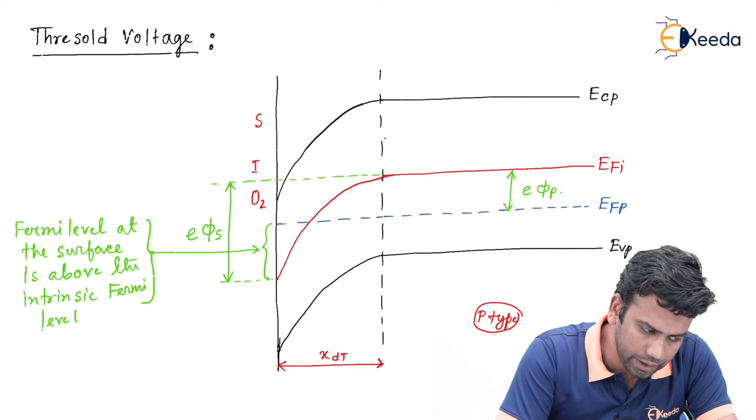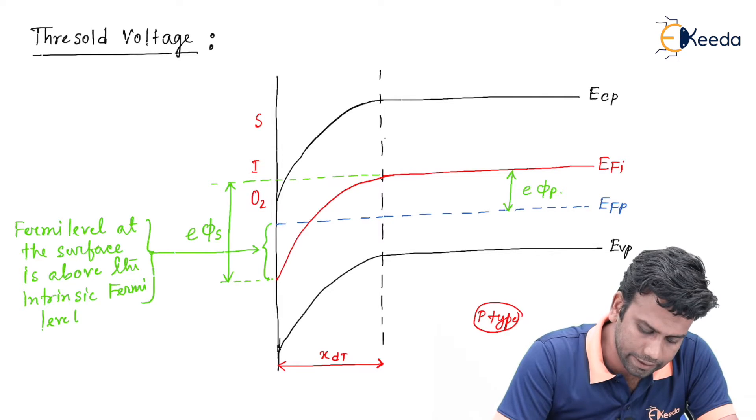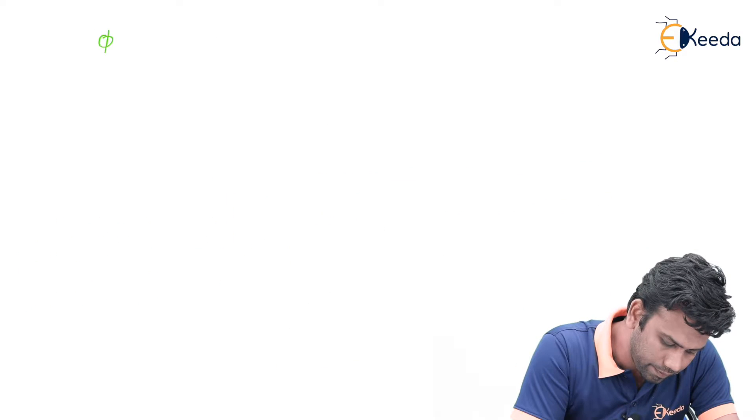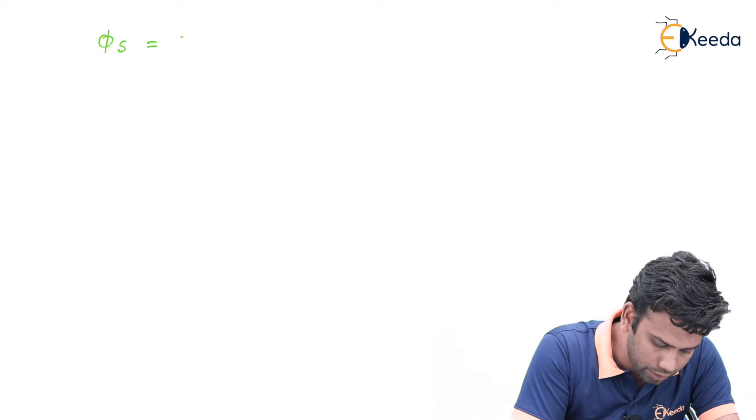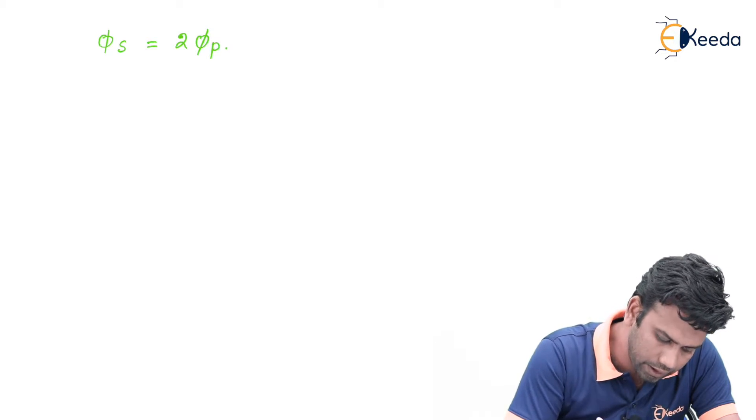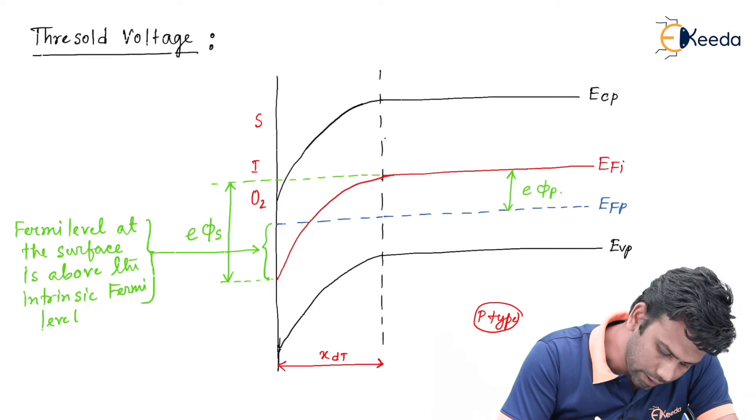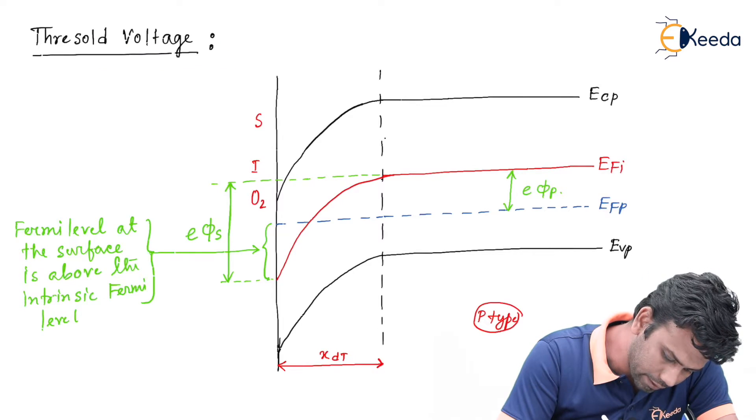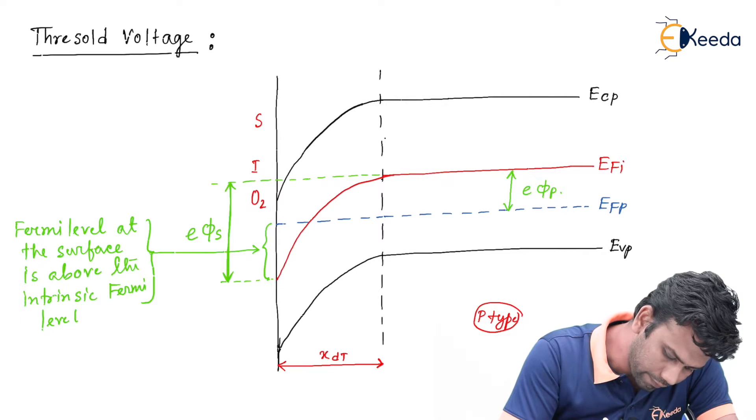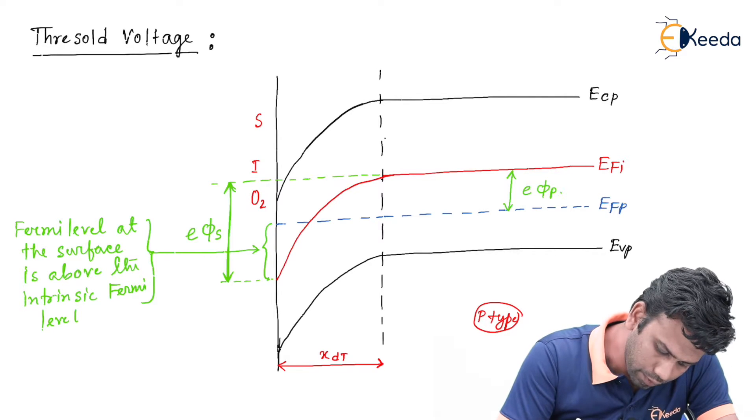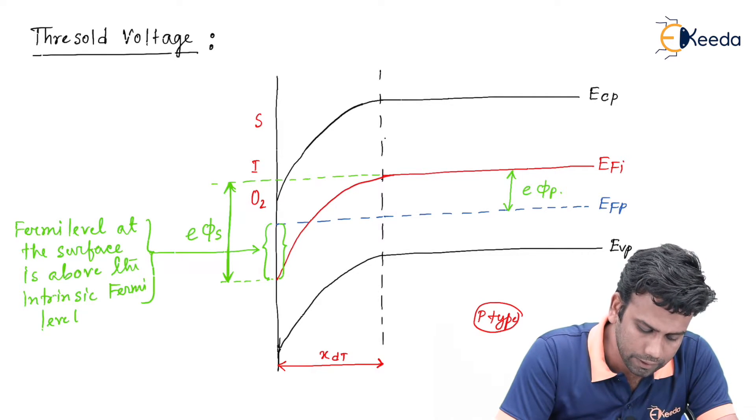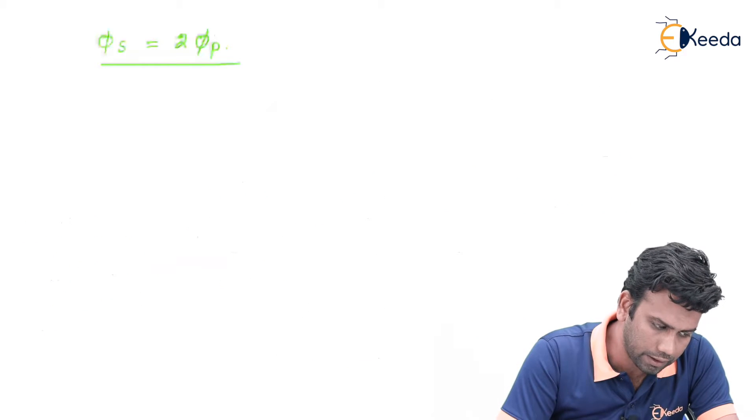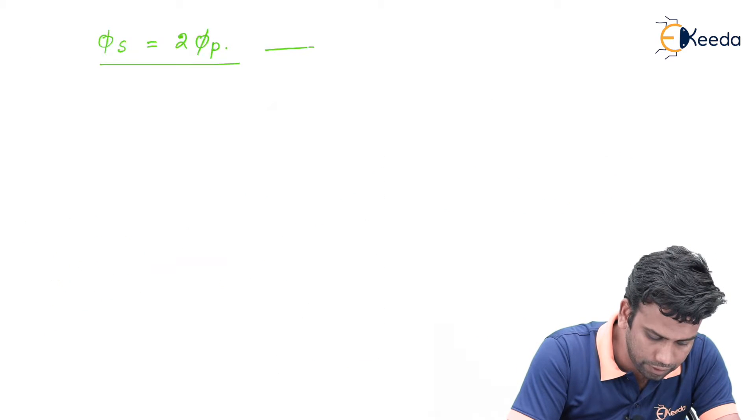Now, when this condition is achieved that phi s equals 2 of phi p, that means this total distance of phi s will be equals to 2 of this one. At that condition, the threshold voltage Vth is defined.